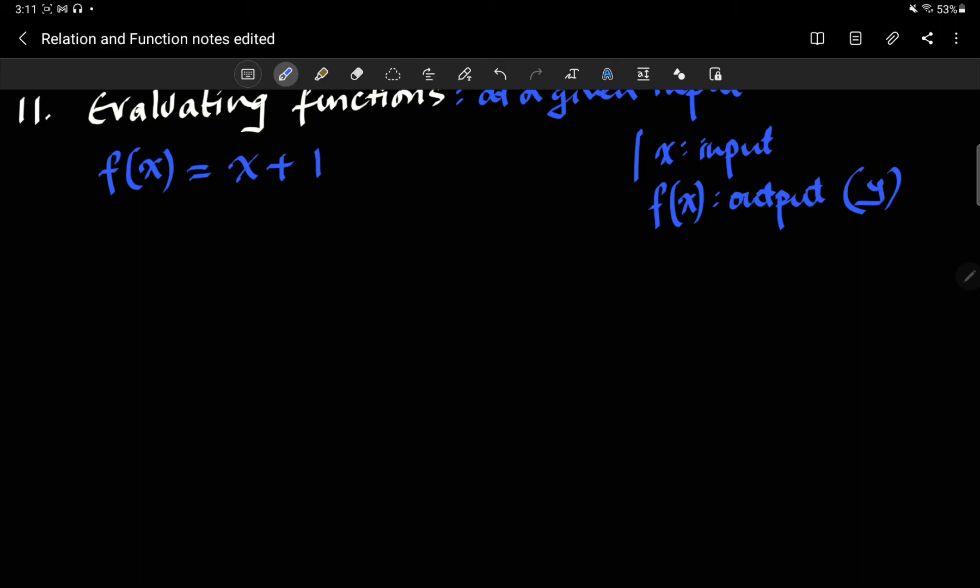The reason we have two notations is you can have functions with more than one variable, in which case maybe y is part of an input and the output is z. The notation f(x) is a more robust notation in terms of extending it to multiple inputs. What evaluating function means is you're basically trying to find, if x has certain values, then what is f(x). For example, if I say evaluate f at x = 1, -2, 7, and a.